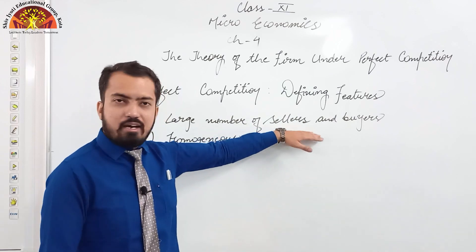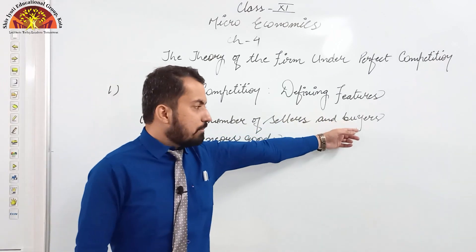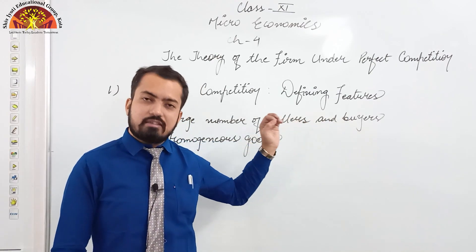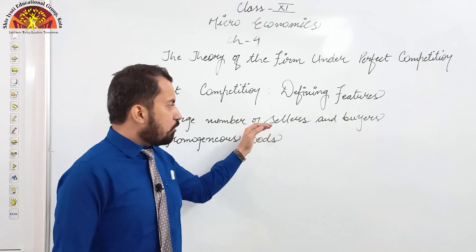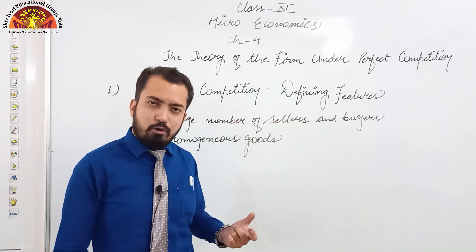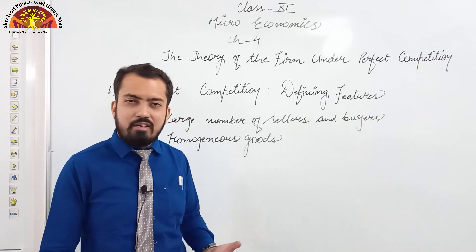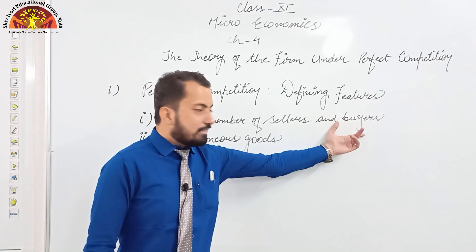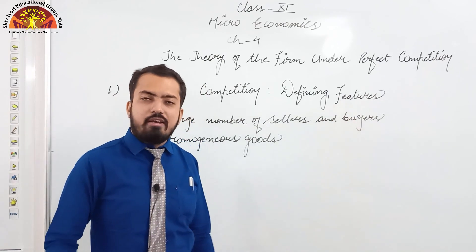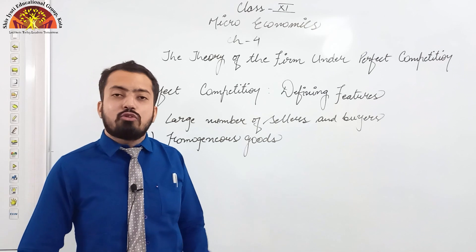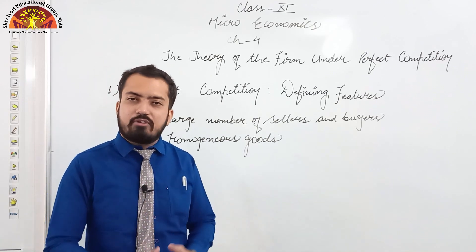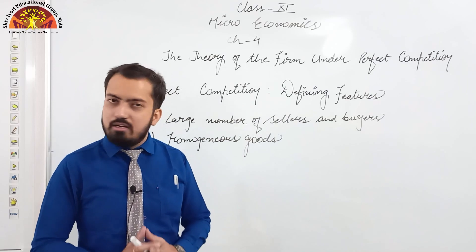We know very well that when a seller enters the market, supply increases, and when a buyer enters the market, demand increases. But here the number is so large that if any one new firm enters or exits the market, the changes in supply will be so minor and fractional that we cannot even represent them. Similarly, if any new buyer enters or exits the market, the changes in demand will also be so minor that we cannot express them graphically.